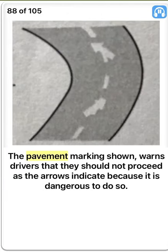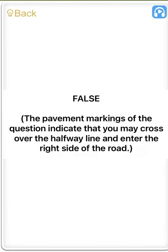The pavement markings shown warn drivers that they should not proceed as the arrows indicate because it is dangerous to do so. False. The pavement markings of the question indicate that you may cross over the halfway line and enter the right side of the road.